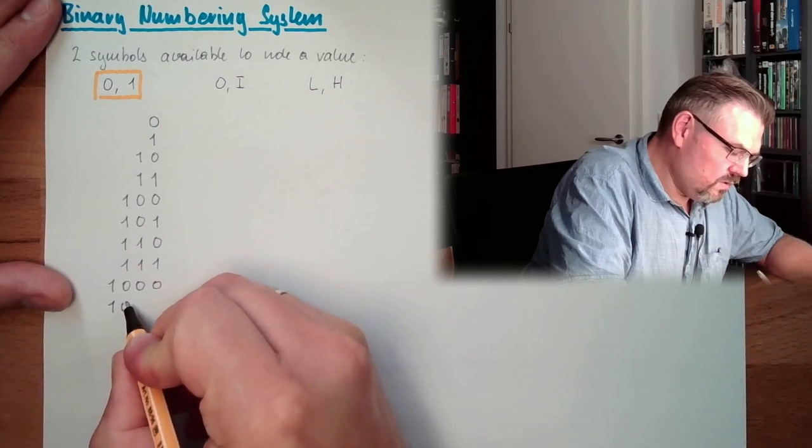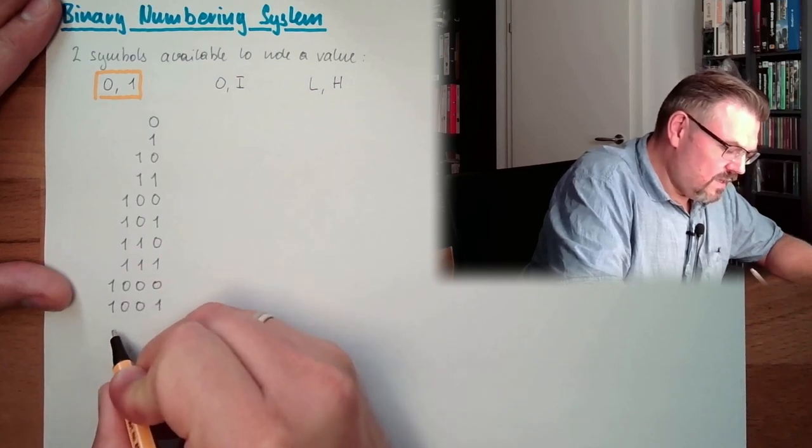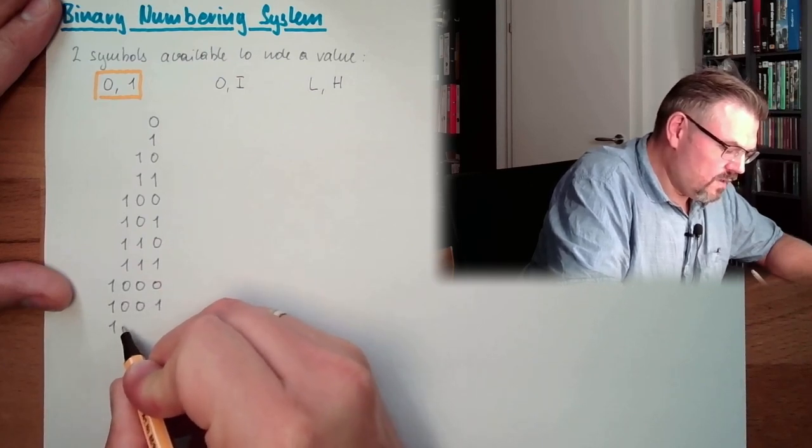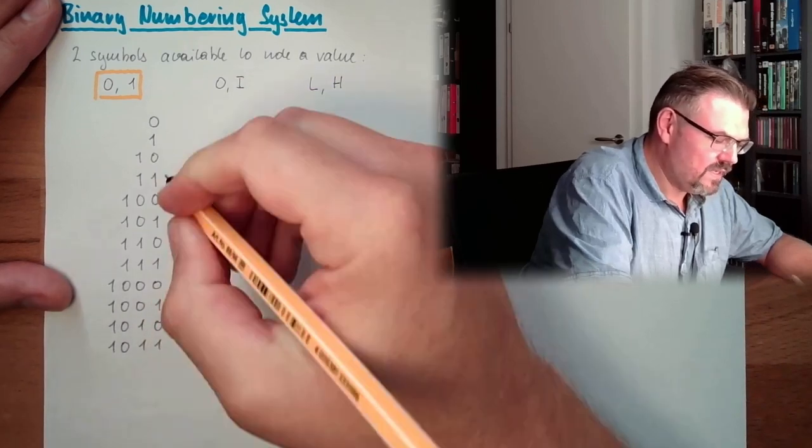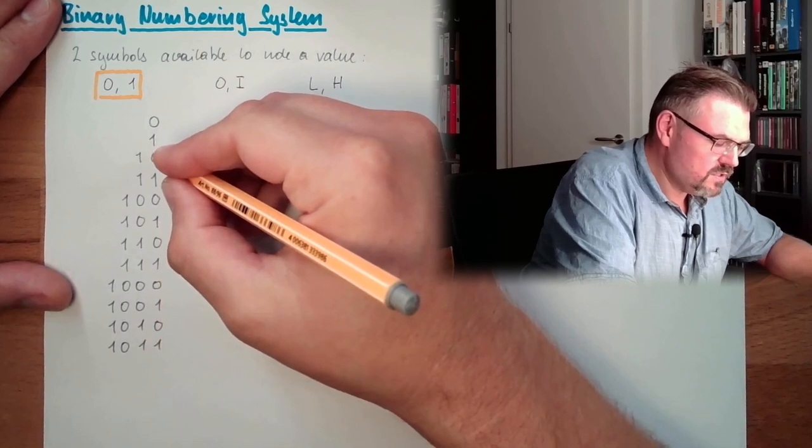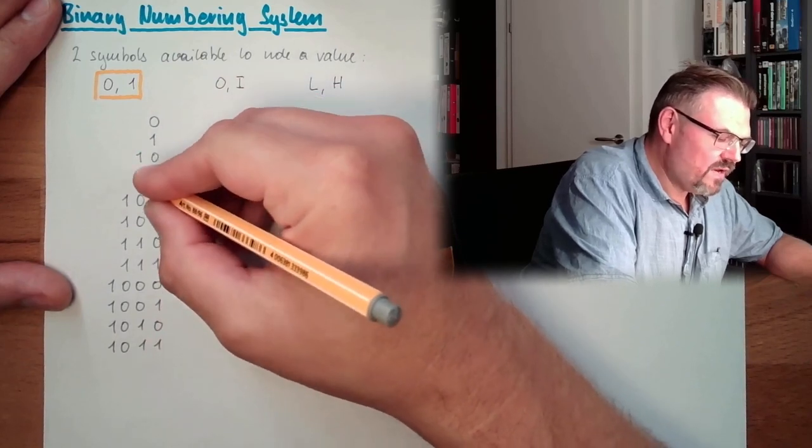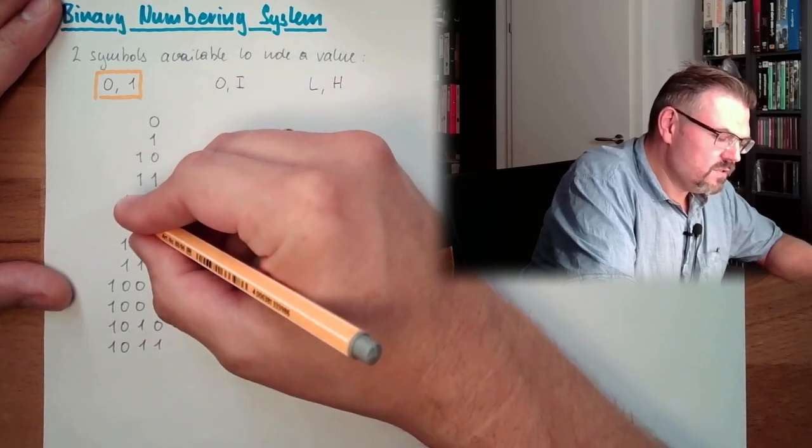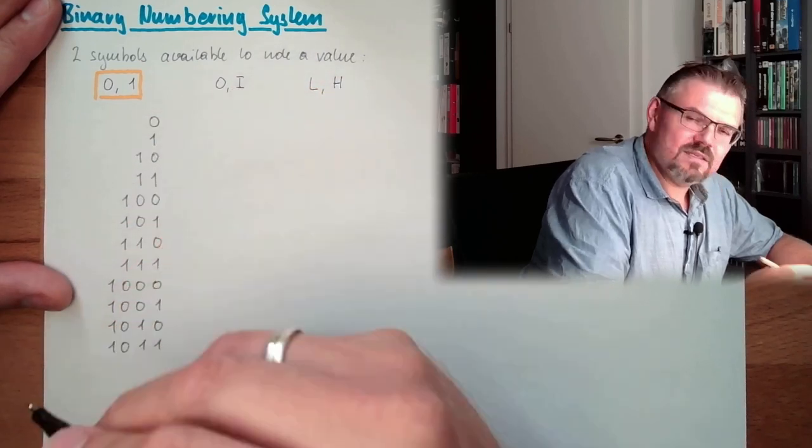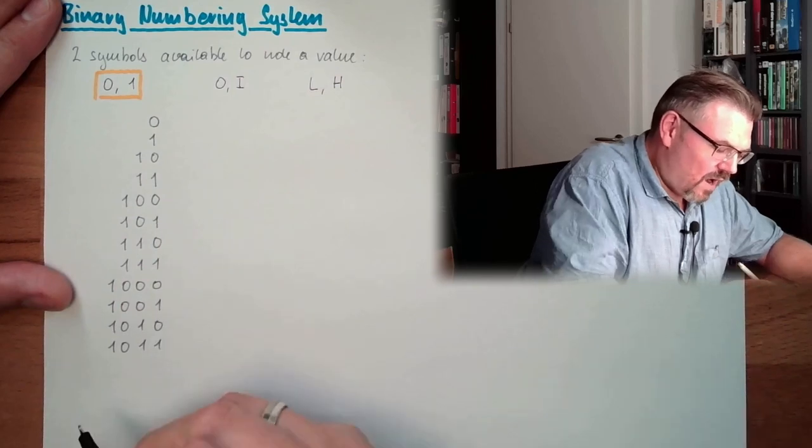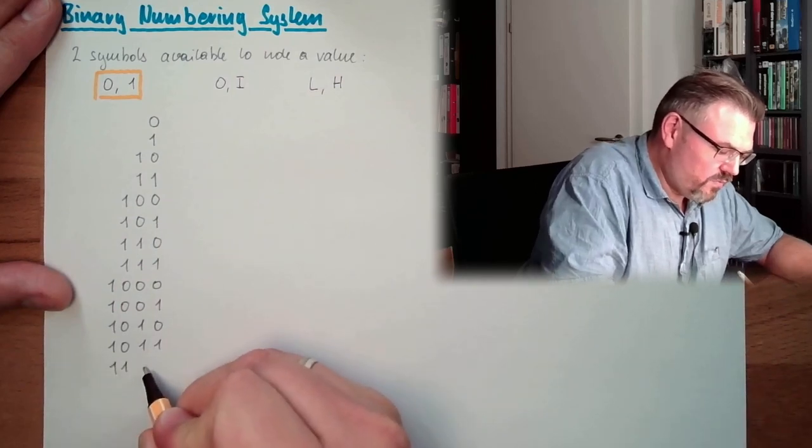It is working exactly like the other numbering system. I am always changing to the next digit to indicate I have used all of the previous combinations. Every time I used all combinations, I use the next digit. That is how a numbering system is working.